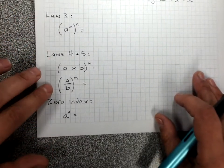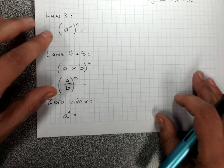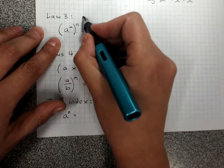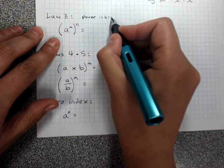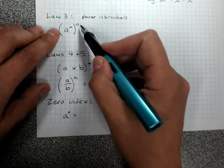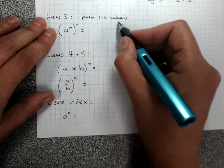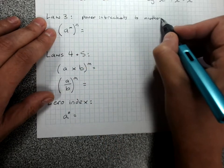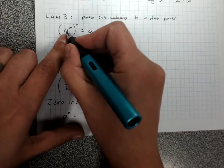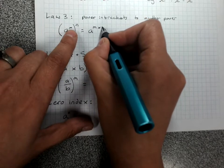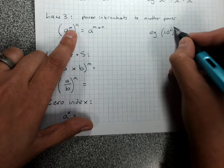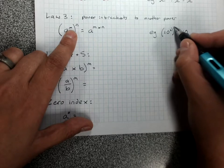Laws 3, 4, and 5 are all to do with brackets — so if you see brackets, you know it's laws 3, 4, or 5, and they often get combined. Law 3 says I've got a power in brackets raised to another index outside the bracket — a power to a power. The rule is: keep the same base number and multiply the indices. For example, 10 squared to the power of 3 — keep the same base, 2 times 3 is 6.